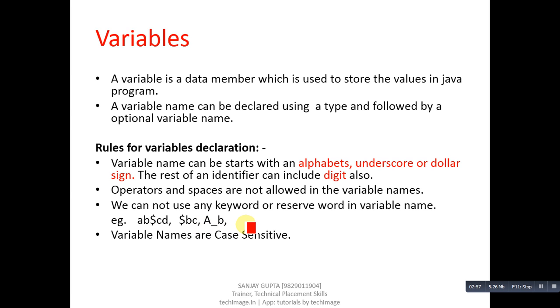Variable names are case sensitive. Case sensitive means uppercase and lowercase letters are treated differently. C, C++, and Java—all these languages are case sensitive, so we have to take care about the case-sensitive nature while declaring variables.